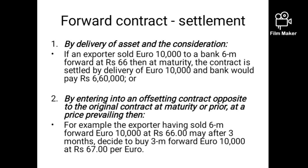Similarly, if I am long forward and want to exit, either I actually buy or I enter into a reverse transaction — go short forward — and the contract is settled. So this is how settlement can be done: number one, by actually fulfilling the obligation — buyers buy, sellers sell; or number two, by entering into an offsetting transaction. If you are initially long forward and don't want to buy, enter into short forward. If you are initially short forward and don't want to sell, enter into long forward. That is called an offsetting transaction, and the contract is over.